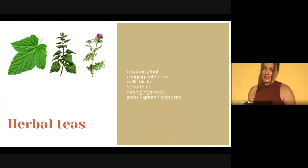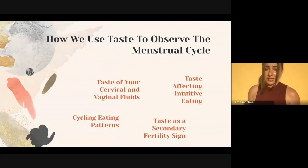Herbal teas, not exactly a food, can be a great thing to cycle on and off depending on what your body's asking for in different phases. These are a few choices I've worked with: raspberry, stinging nettle, milk thistle, spearmint, ginger, and various types of tea like black tea, green tea, or pu-erh tea.